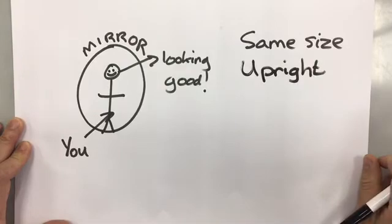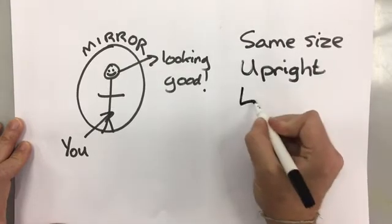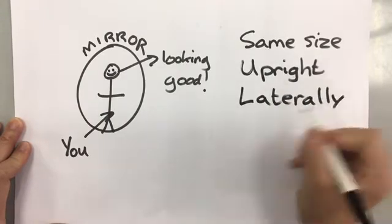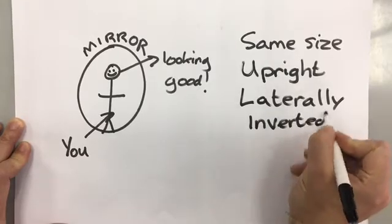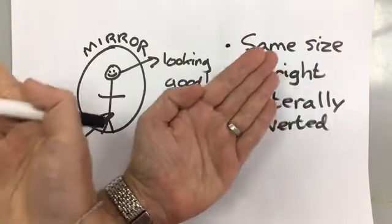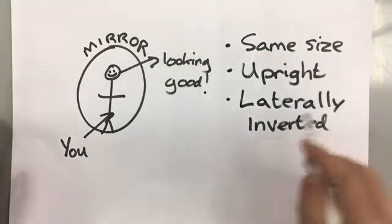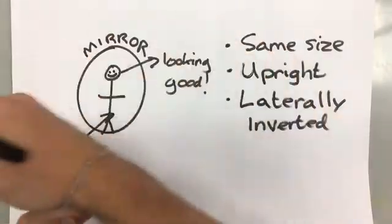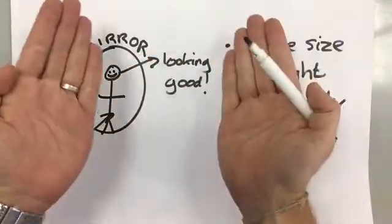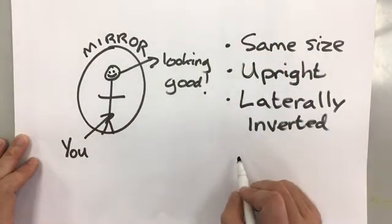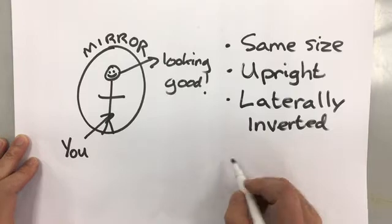Your head is at the top and your legs are at the bottom, just the same as in the mirror. We also say it's laterally inverted. Laterally inverted means flipped. Laterally means horizontally, so it hasn't been flipped upside down but you are flipped back to front, laterally inverted, a mirror image.